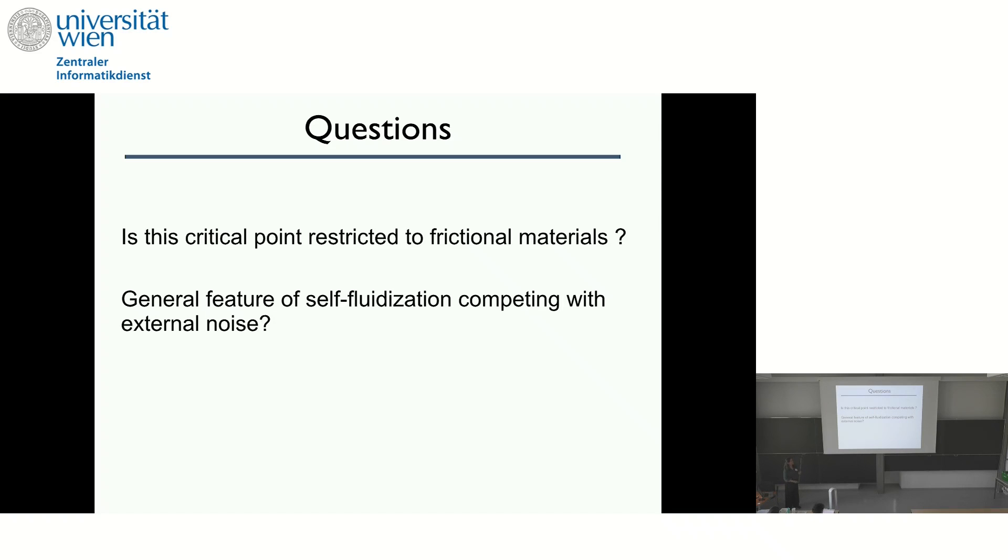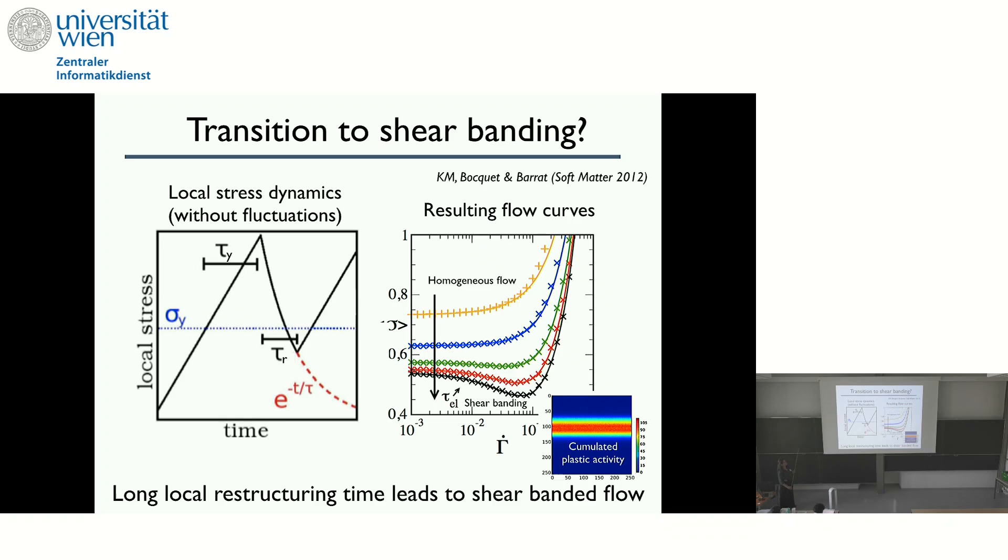So our questions are, is this critical point restricted to frictional material? And can it be a general feature of self-fluidization competing with external driving? To do this, we were using the elastoplastic model. And it's known that if you, so I was talking about two different times. The time to become plastic when you're above the yield stress. And there's another stochastic time, the typical time to become elastic again when you relax. And if this typical time to find your new configuration that is elastic is very long, you can show that you're going from a homogeneous flow to a non-homogeneous flow with these non-monotonic flow curves. And so you can see here, for example, the cumulative plastic activity for this black curve. You see that everything accommodates in a band of the shear.